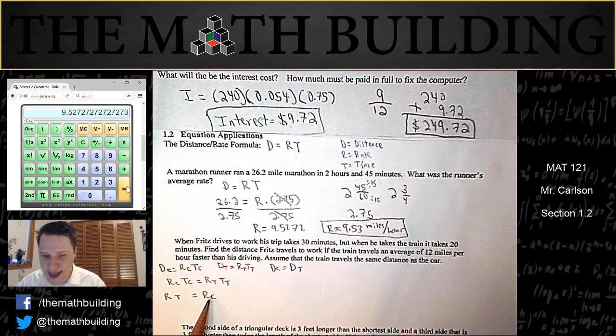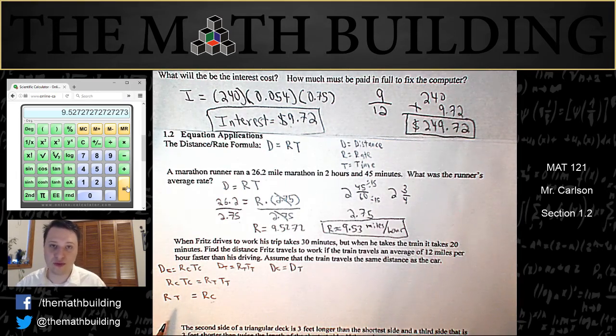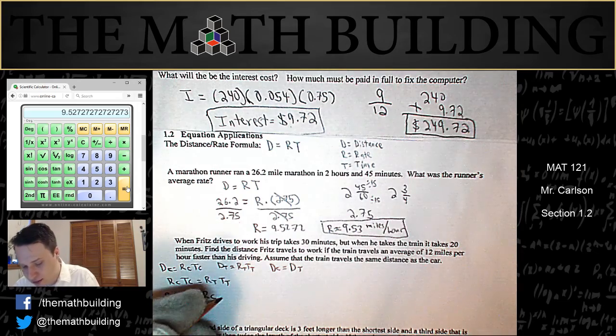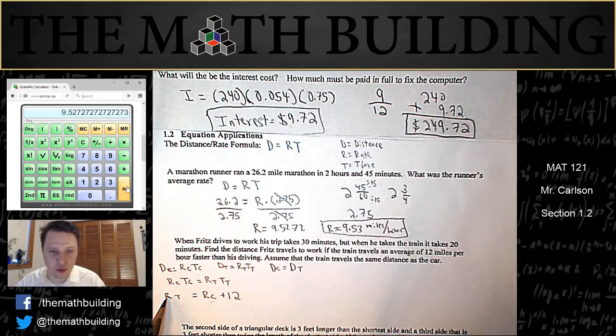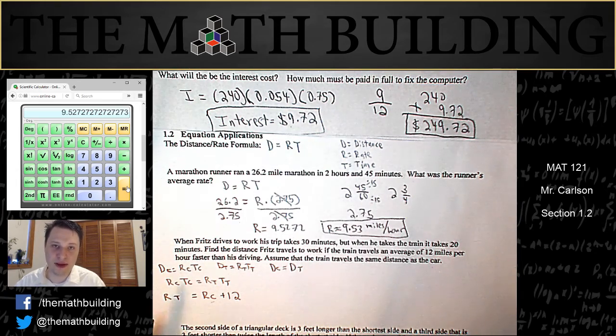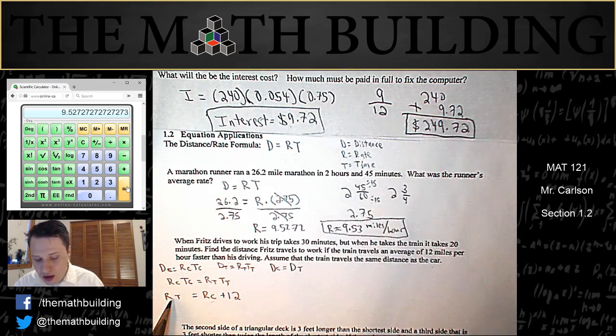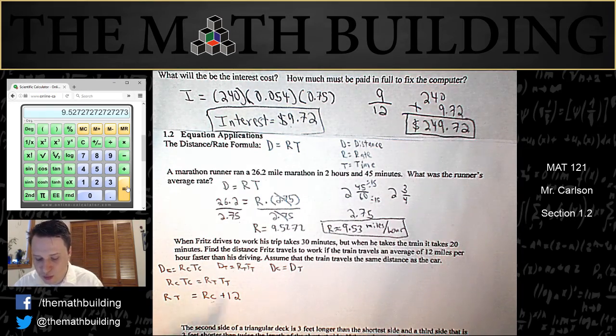Well you can either add to the weaker side or subtract from the stronger side. So I would add 12 right here. Because as I said, the train is 12 faster. So if the car was 8, 8 plus 12 would be 20.